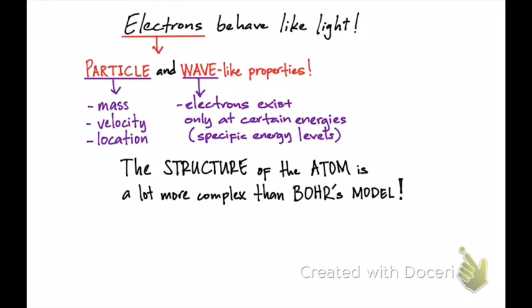The structure of the atom is actually a lot more complicated and complex than Bohr's model of the atom. It's not as simple as electrons revolving around the nucleus, or electrons residing in stationary states or energy levels. It's a lot more complex than that, and that's what quantum mechanics or the quantum mechanical model is all about. We're going to look at orbitals, energy levels, sublevels, and so on.